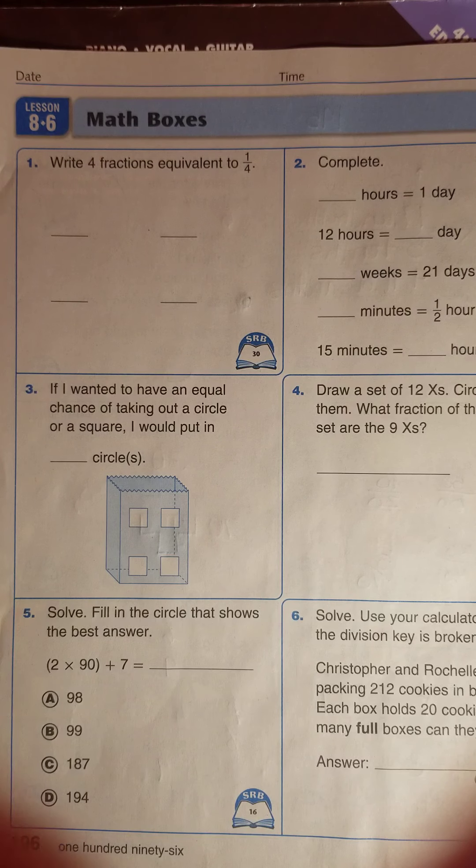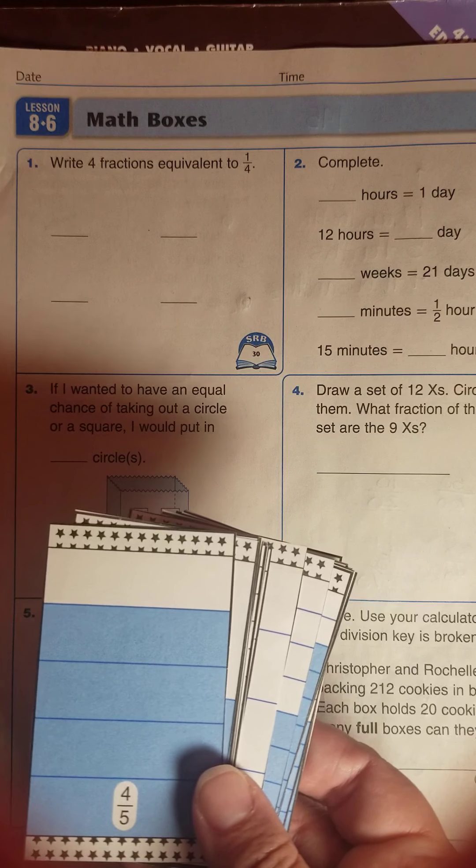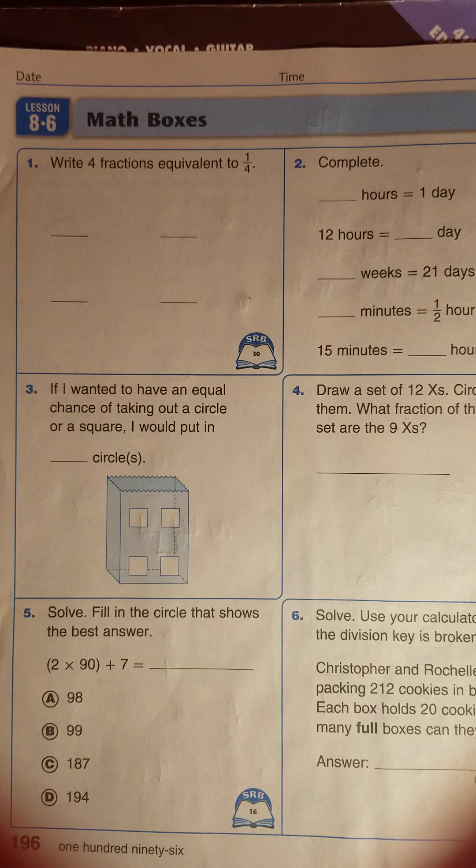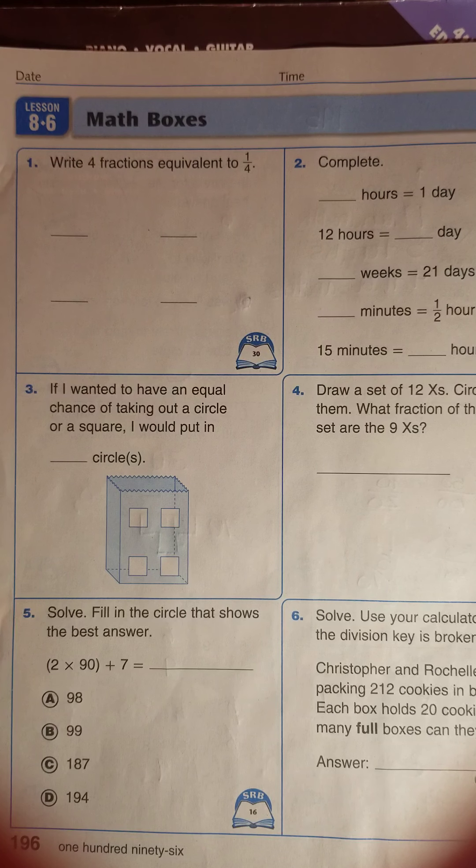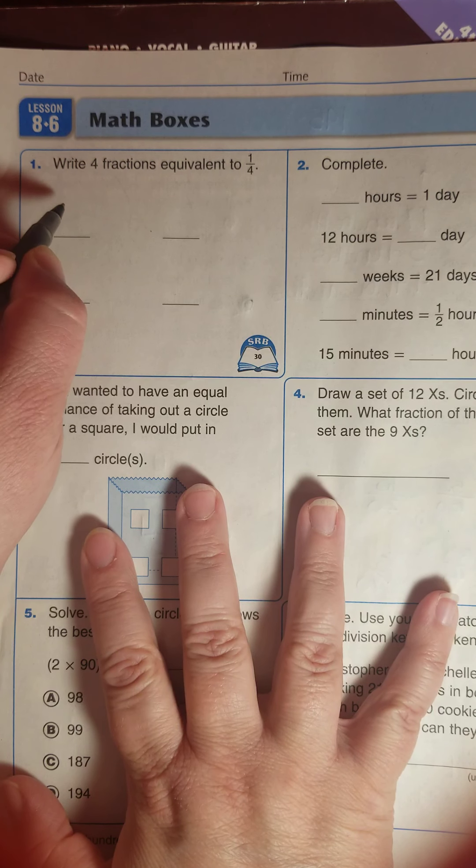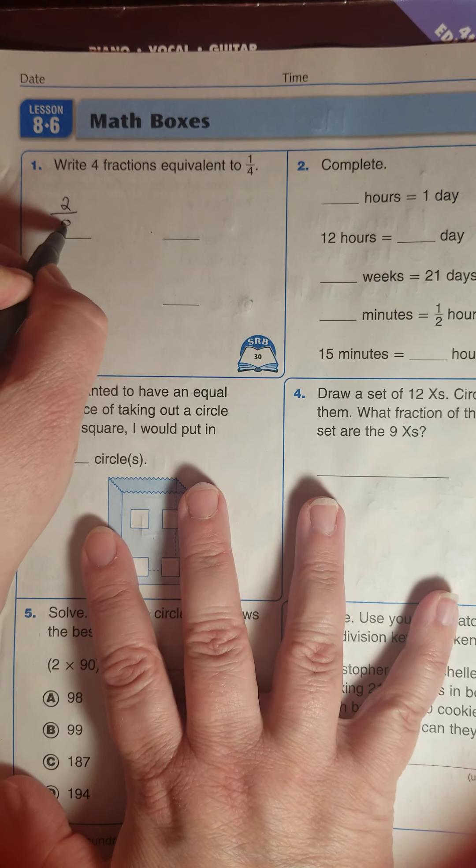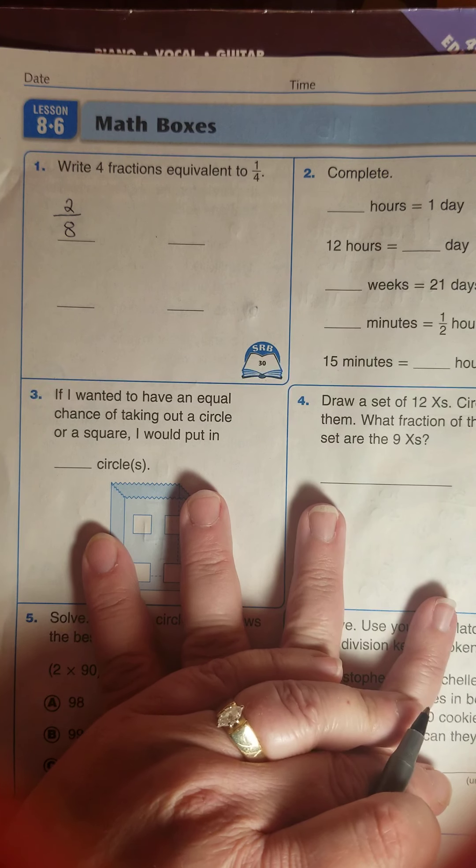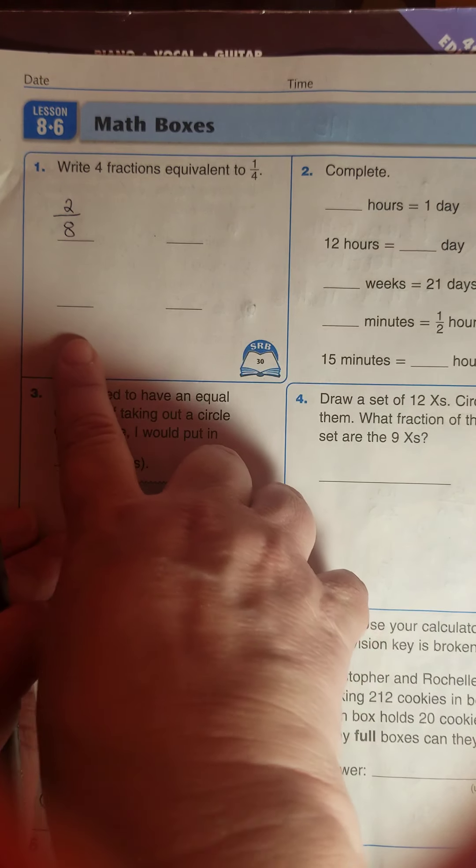Looking at box number one, writing four fractions equivalent to one-fourth. You could have gotten out your fraction cards, but I'm going to do this a different way today. I'm going to double one-fourth on the top and bottom. If I have one two times I have two, and if I have four two times I have eight. Two-eighths is actually equivalent to one-fourth.